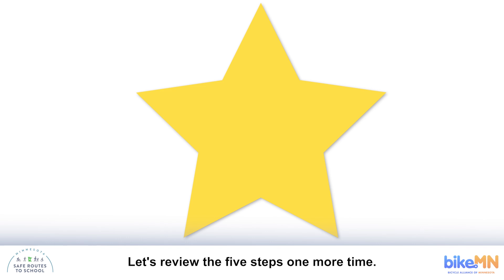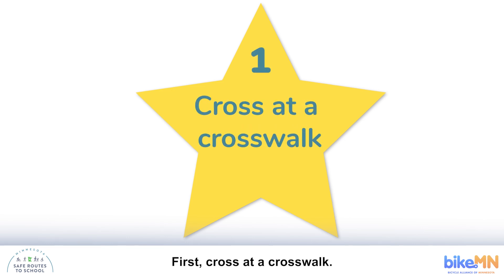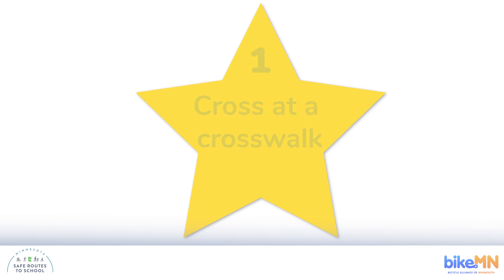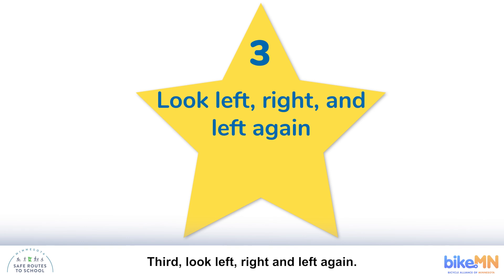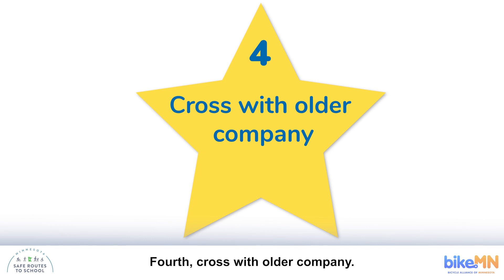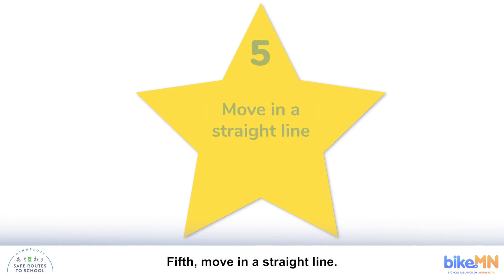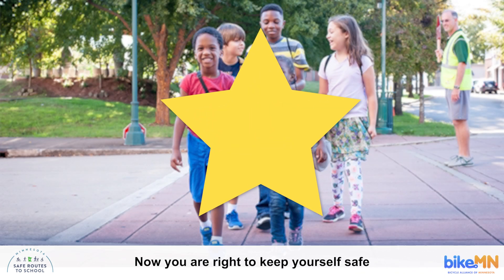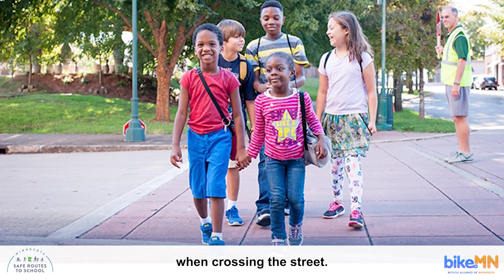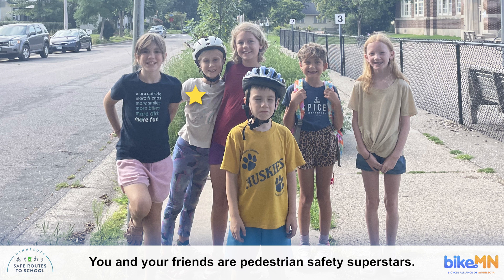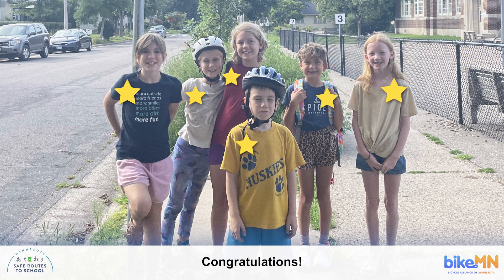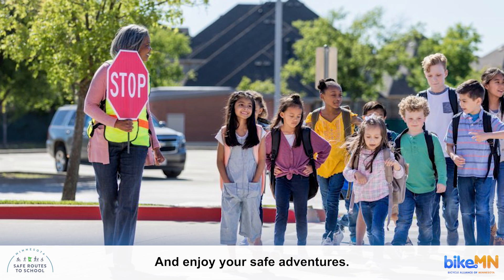And that's it. Let's review the five steps one more time: first, cross at a crosswalk; second, stop at the edge; third, look left, right, and left again; fourth, cross with older company; fifth, move in a straight line. Now you are ready to keep yourself safe when crossing the street. If you still have any questions, you can ask your teacher. You and your friends are pedestrian safety superstars. Congratulations! And enjoy your safe adventures.